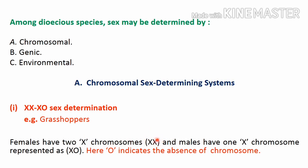In this system, females are homogametic because all their gametes will have the X chromosome, whereas in males two types of gametes are produced: 50% of gametes will have the X chromosome and the other 50% will have no chromosome at all.